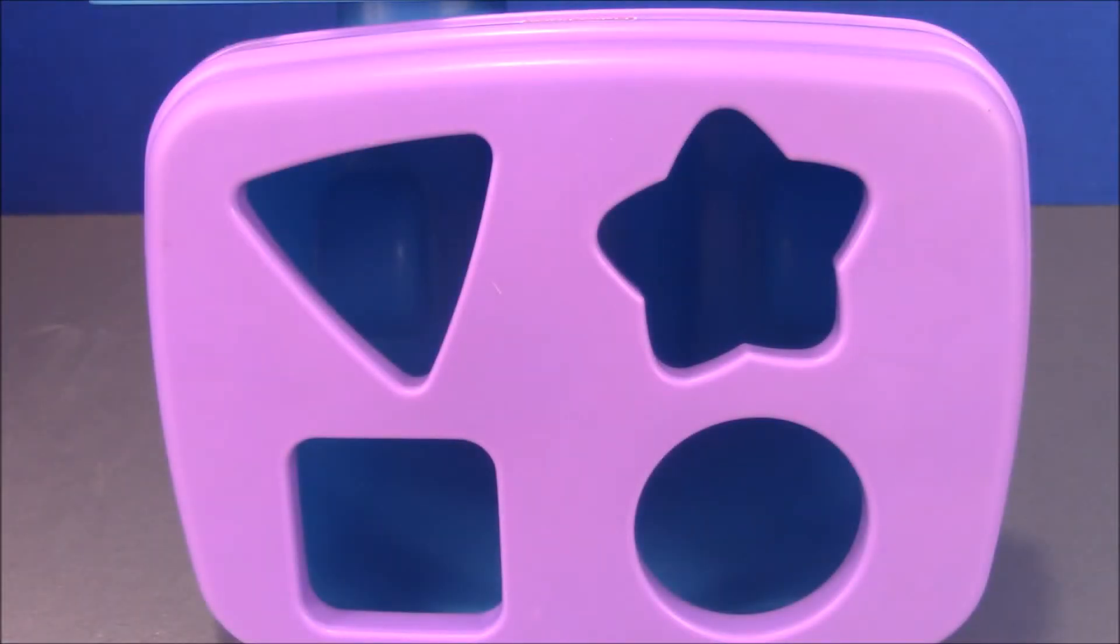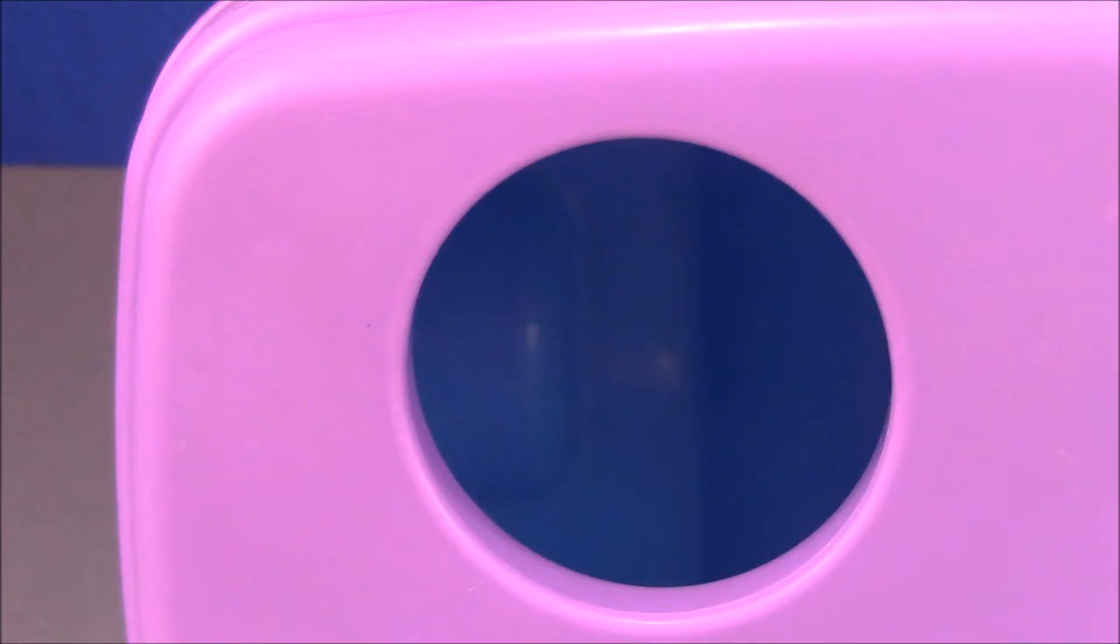Here's the top of the Shape Sorter. We have the triangle shape, the star shape, the circle shape, and finally we have the square shape.